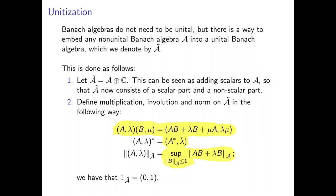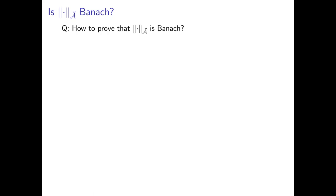Many things are pretty obvious with this unitization. It's obvious that it has a unit, and it's easy to check that the star operation is an involution and is conjugate linear — though it's not an isometry. But what about the norm? Is this norm actually a Banach norm? The answer is yes, it is. But how do we prove it? We do it by using operators.